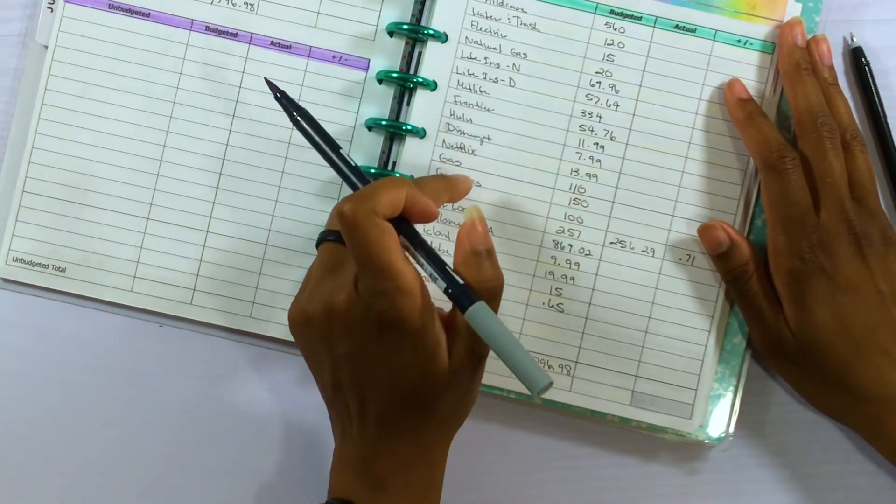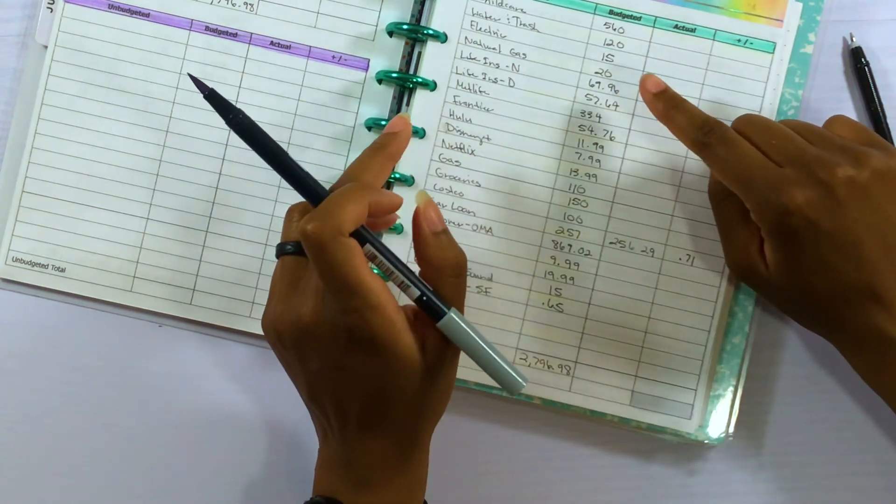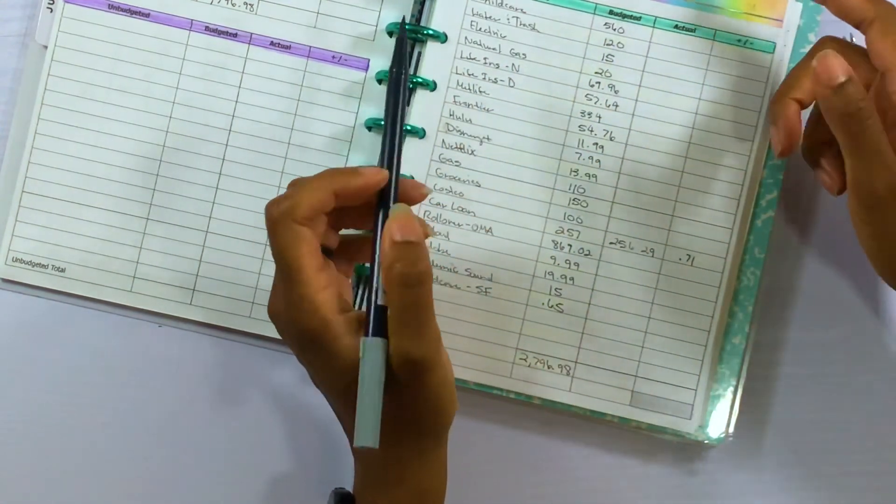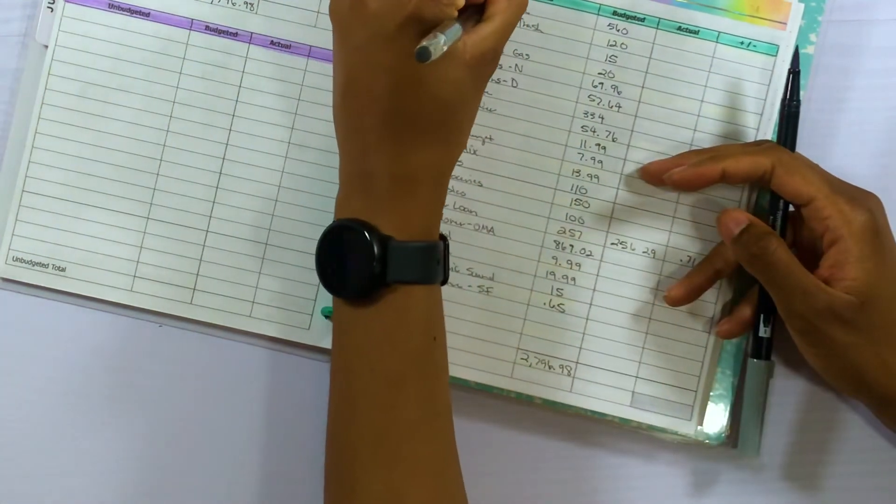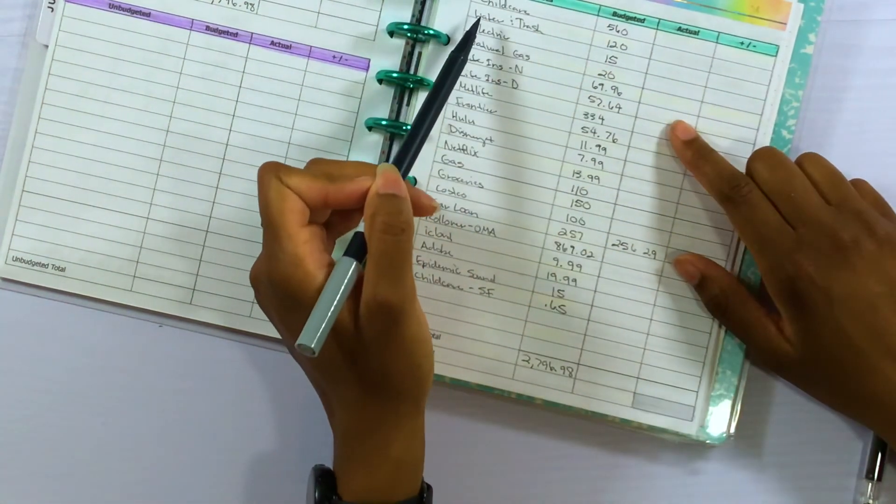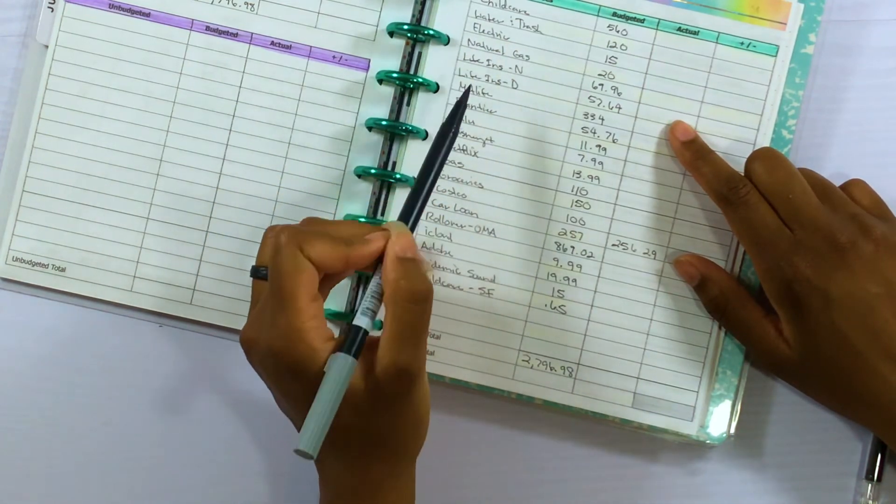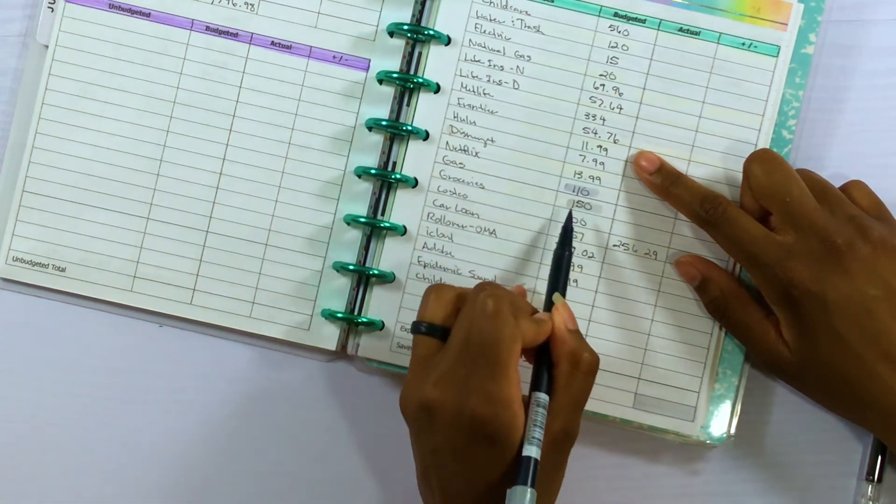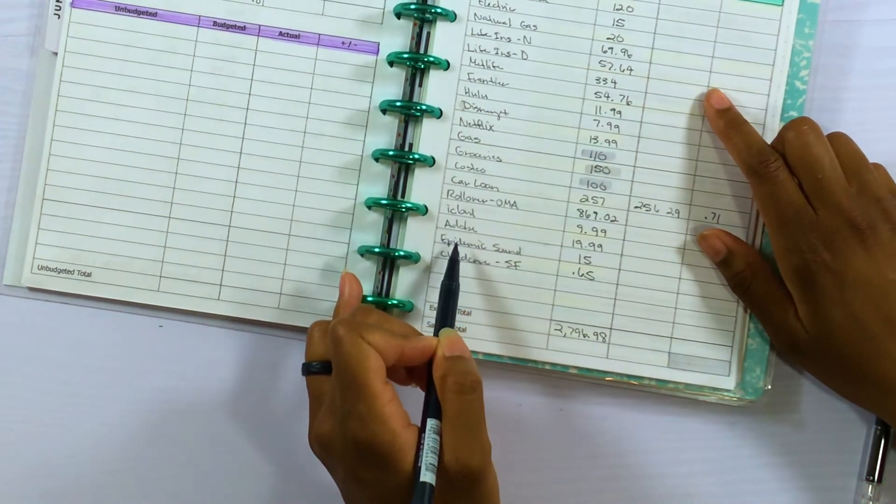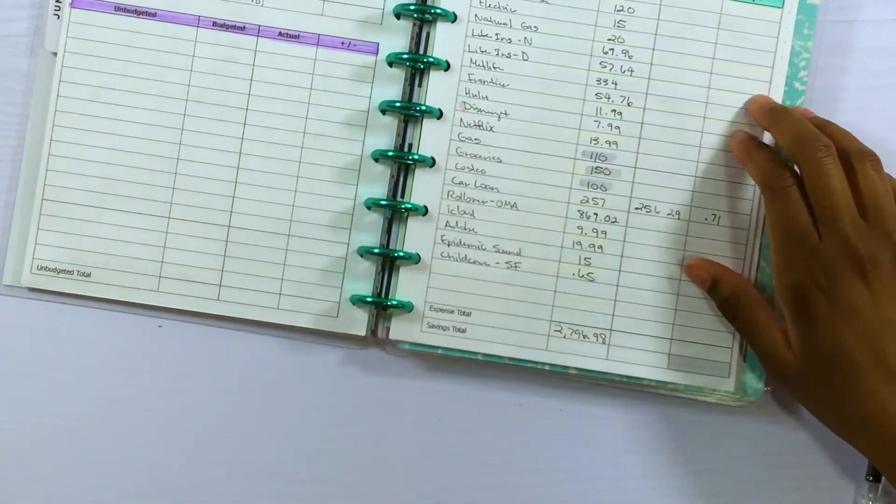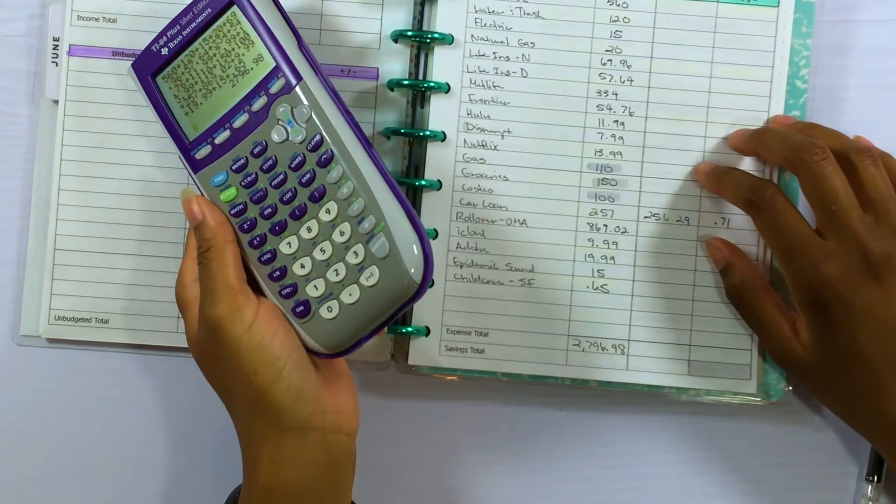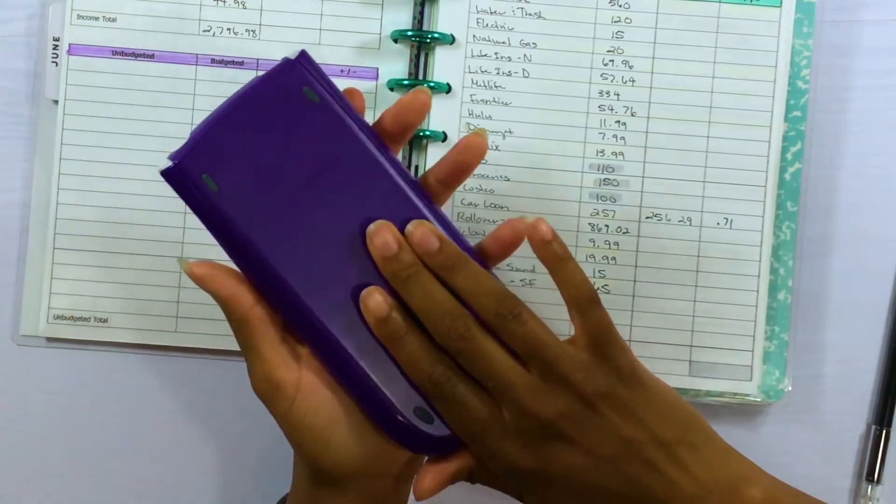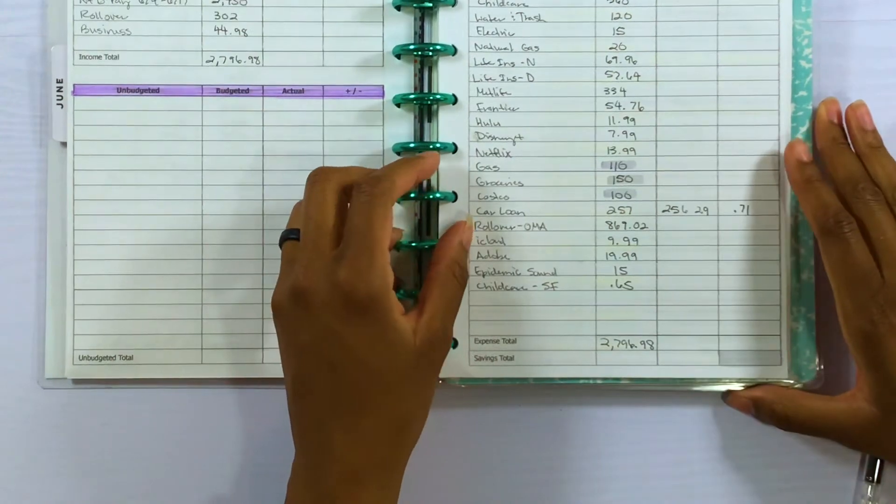But for right now I'm going to highlight all of the expenses that I need to transfer from our bill paying account to Q Money so that we can break it down into the individual cash envelopes. So let's see, all of these are bills and bills stay in our bill paying account. So gas, groceries, Costco - and yeah, so those are the three that we need to transfer and that's going to be $360. So let me go ahead and divide up the sinking funds right now and then I'll be back once I'm done.